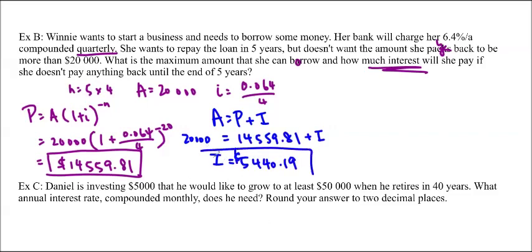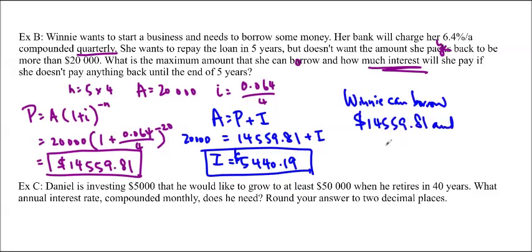So, there we go. And we should write a concluding statement. So, Winnie can borrow $14,559.81 and will pay $5,440.19 in interest. And there we go.